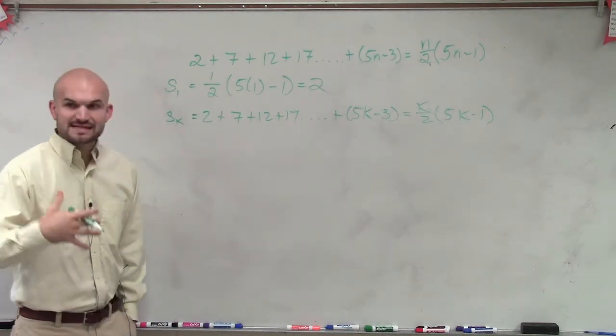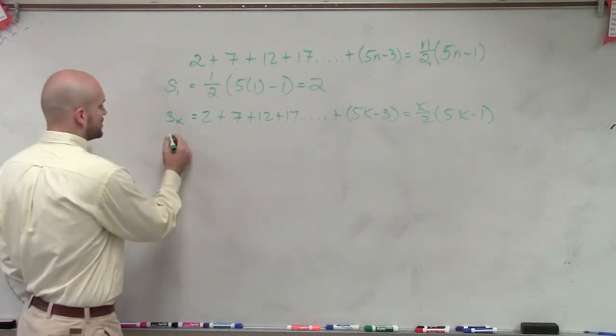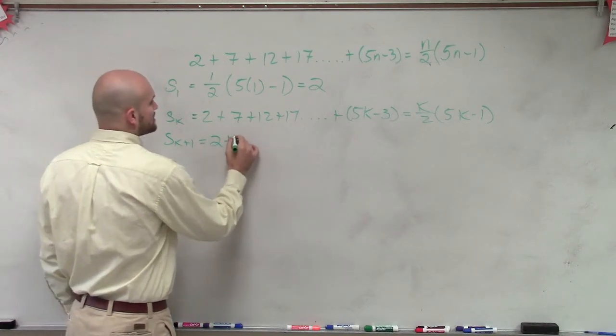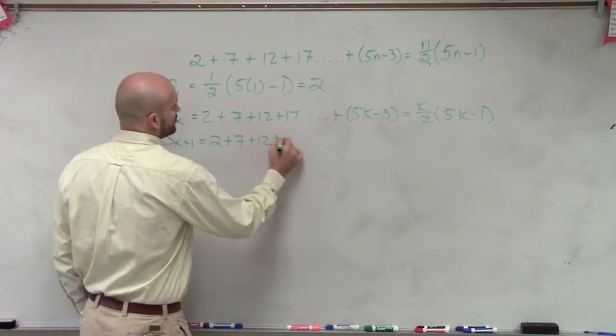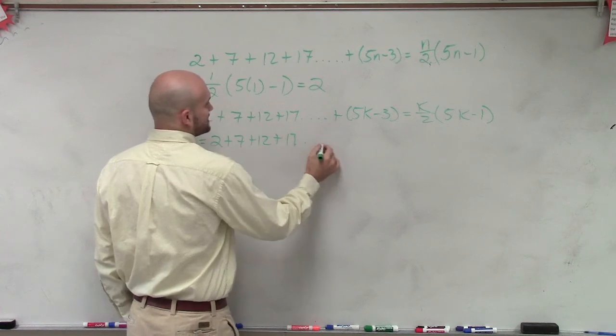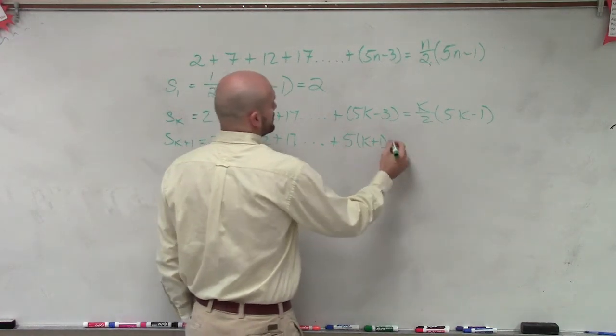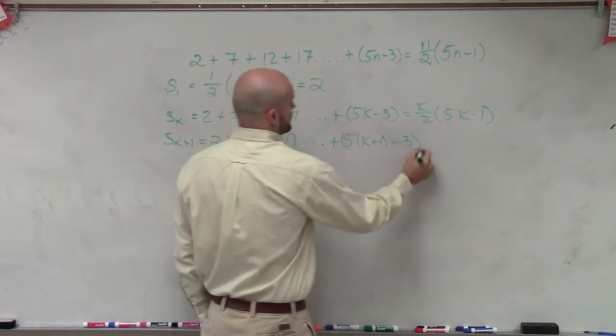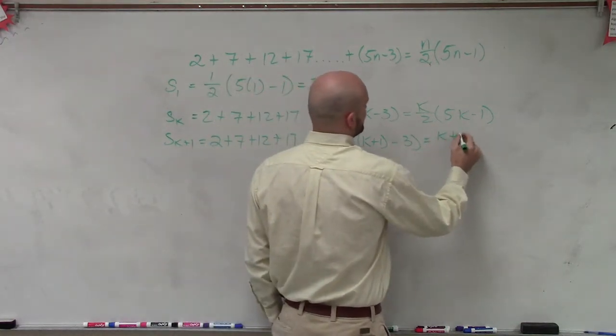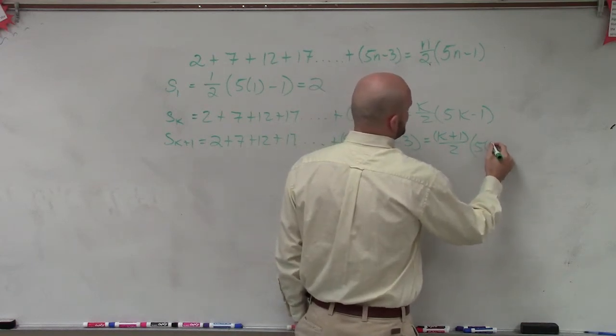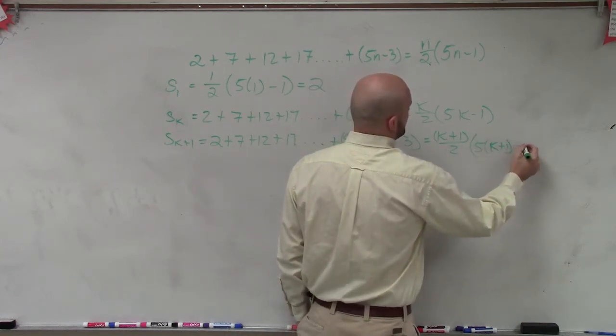And then now what I need to prove is that k plus 1 is also going to work. So I have s of k plus 1 equals 2 plus 7 plus 12 plus 17 dot dot dot plus 5 times k plus 1 minus 3